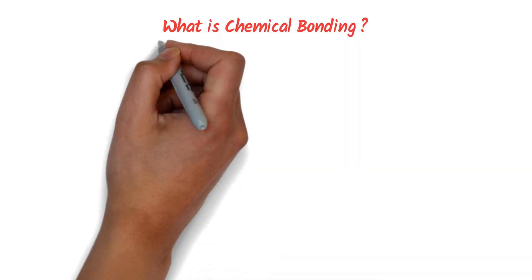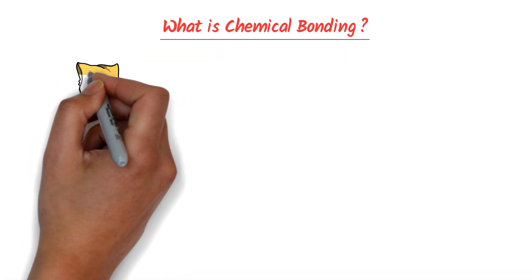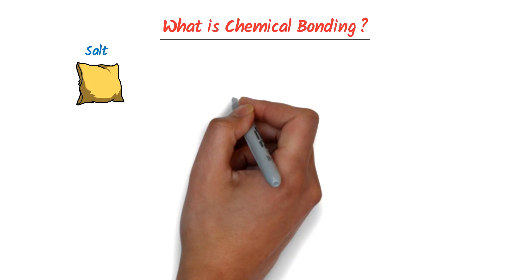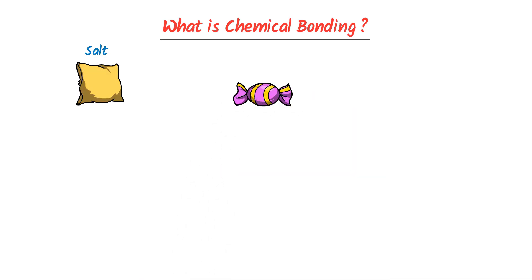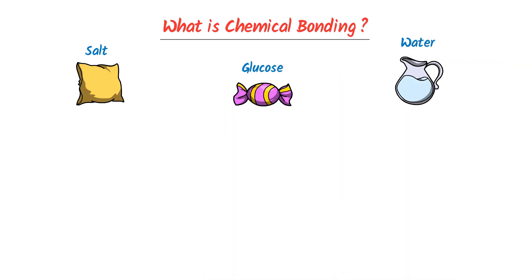What is chemical bonding? To learn the concept of chemical bonding, consider daily life examples like salt, common sugar like glucose, and water.